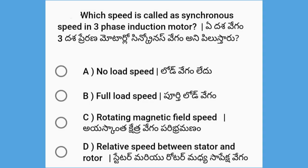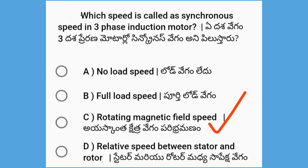Next, which speed is called Synchronous Speed in a 3-phase Induction Motor? The options are No Load Speed, Full Load Speed, Rotating Magnetic Field Speed, and Relative Speed between Stator and Rotor. The answer is Rotating Magnetic Field Speed.